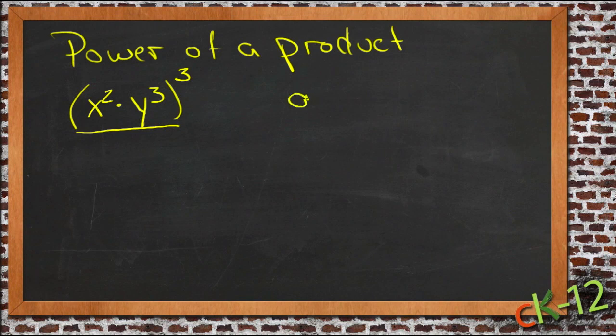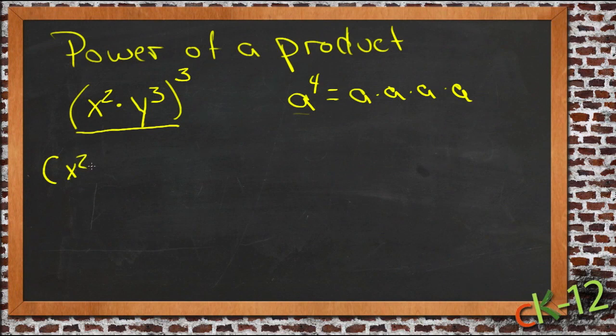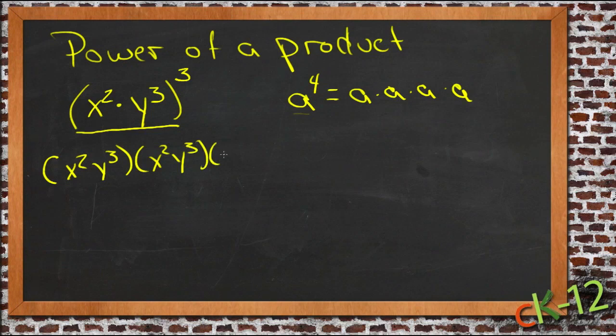So just as before when we had something like a to the fourth power, and that meant that we were taking the base, a, times itself four times, when we're taking the power of a product, we're doing the same thing. We're just taking everything that's inside the parentheses times itself this many times. So this would be x squared, y cubed, times x squared, y cubed, times x squared, y cubed.